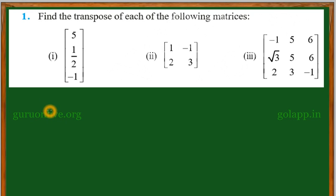Find the transpose of each of the following matrices. The first one is [5, 1/2, -1], the second one is [1, 2; -1, 3], and the third matrix is [-1, √3, 2; 5, 5, 3; 6, 6, -1]. This is the given question — we have to find the transpose of each matrix.